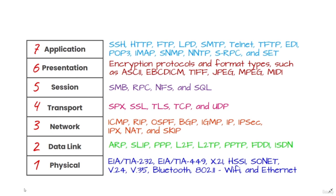The OSI model was created at a time when network computing was in its infancy. It was published in 1984 by the ISO, and though it does not always map directly to specific systems, the OSI model is still used to this day as a means to describe network architecture.